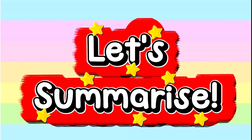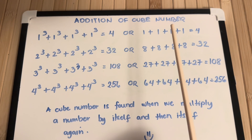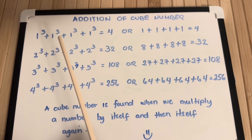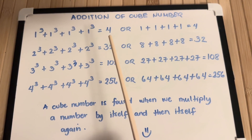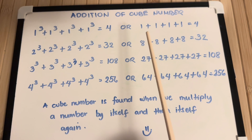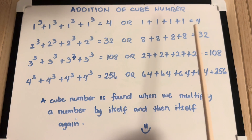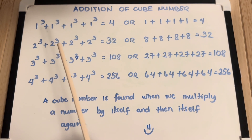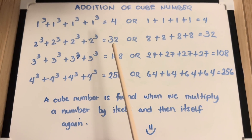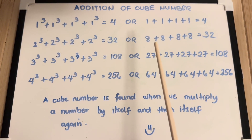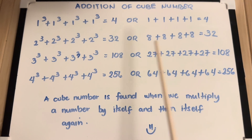Let's summarize. Addition of Cube Numbers: 1 cube plus 1 cube plus 1 cube plus 1 cube is equals to 4. Or 1 plus 1 plus 1 plus 1 is equals to 4. 2 cube plus 2 cube plus 2 cube plus 2 cube is equals to 32. Or 8 plus 8 plus 8 plus 8 is equals to 32.